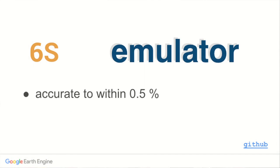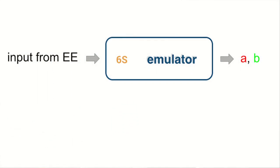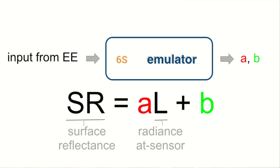A thousand images with just a single wave band would take over half an hour. We created a 6S emulator. It is accurate within half a percent to the original 6S code, and it works with any satellite mission. Here is how it works: take some inputs from the Earth's origins, run it through the emulator, and get two correction coefficients, A and B. Surface reflectance is then a linear combination of radiance and these coefficients.